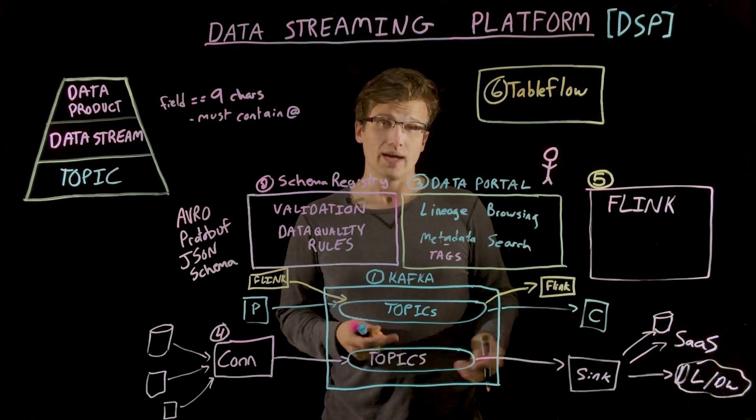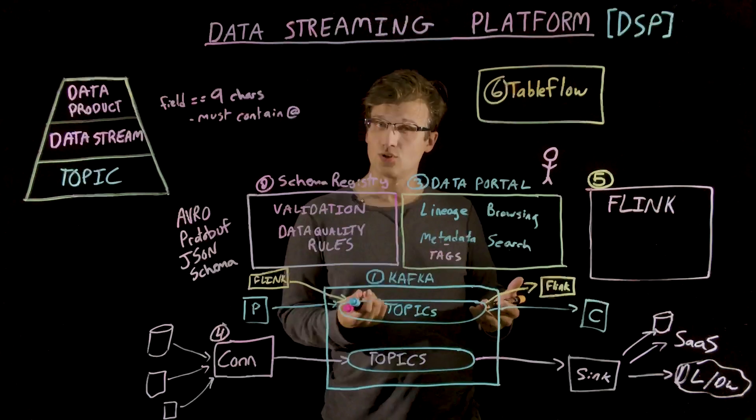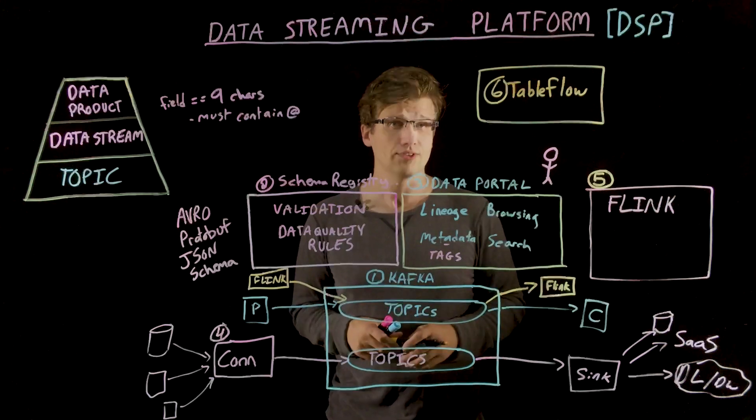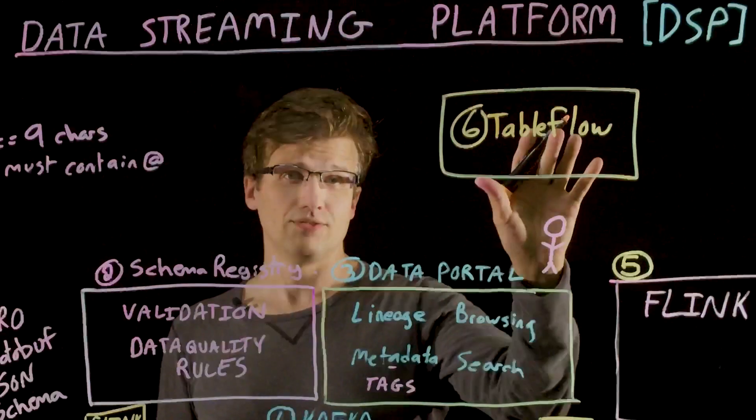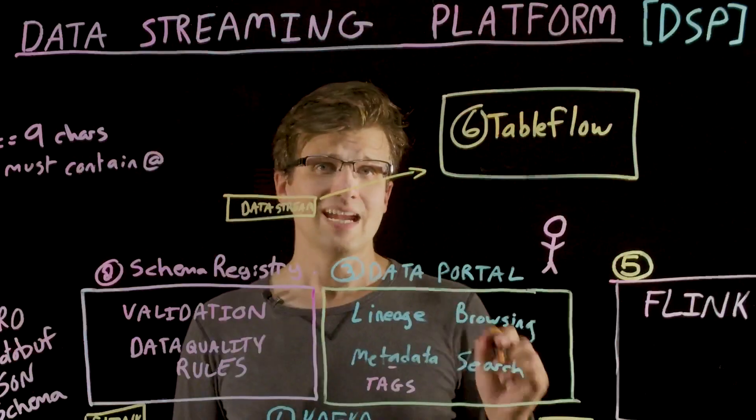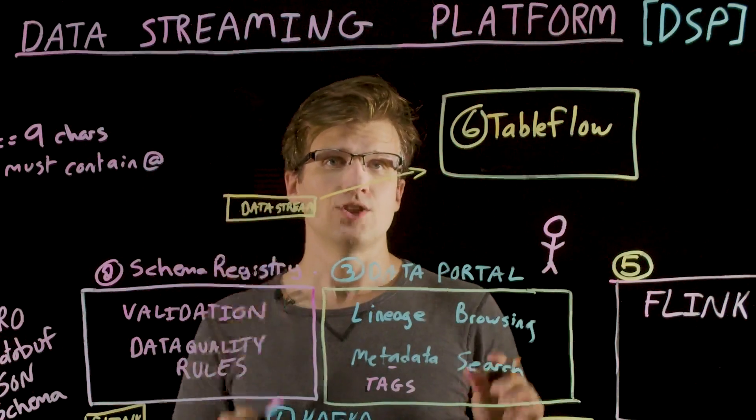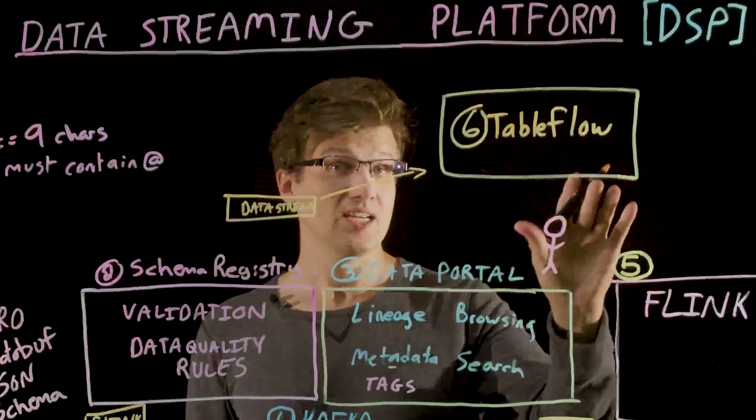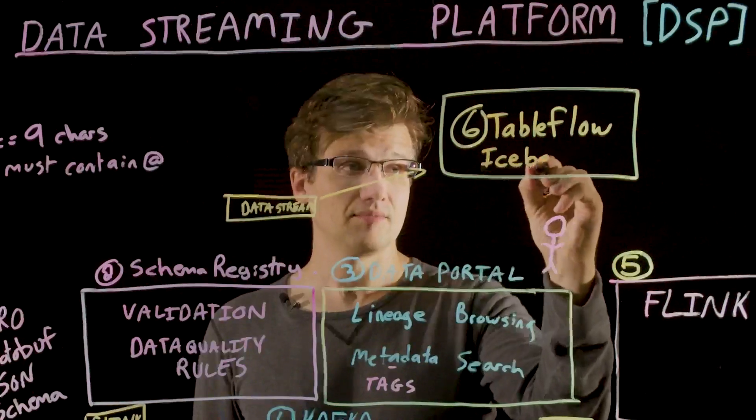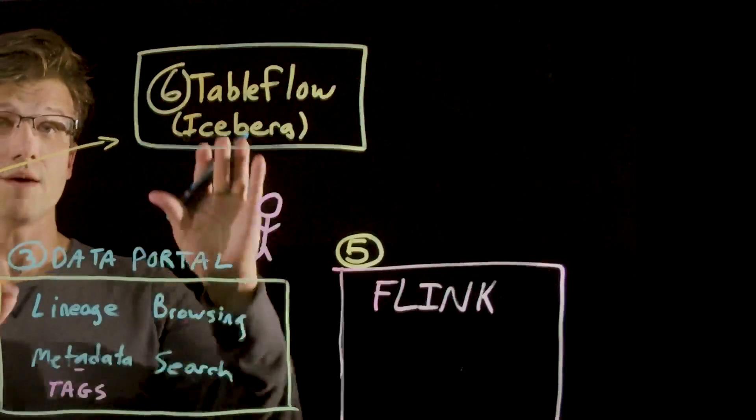And these columnar tables, these parquet-format columnar tables, are queried with something like BigQuery or Redshift or Presto or Trino. Also, things such as Databricks or Snowflake. Confluent's table flow provides an alternative to Kafka Connect. Table flow converts well-formed data streams into append-only Apache iceberg tables backed by parquet files.